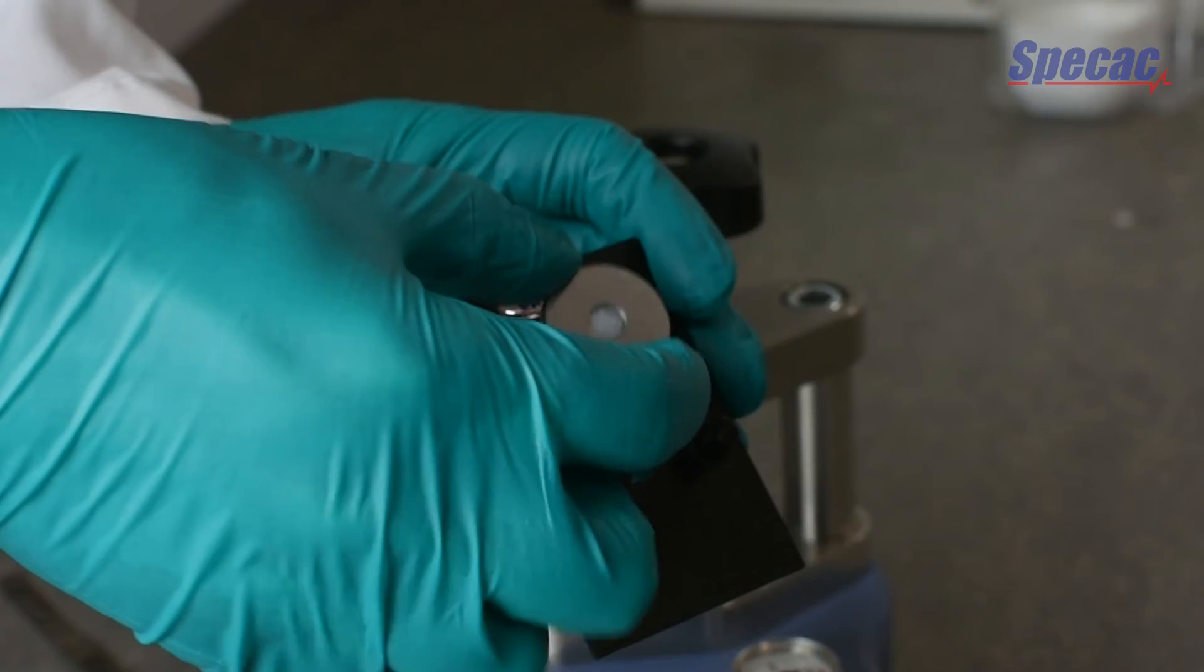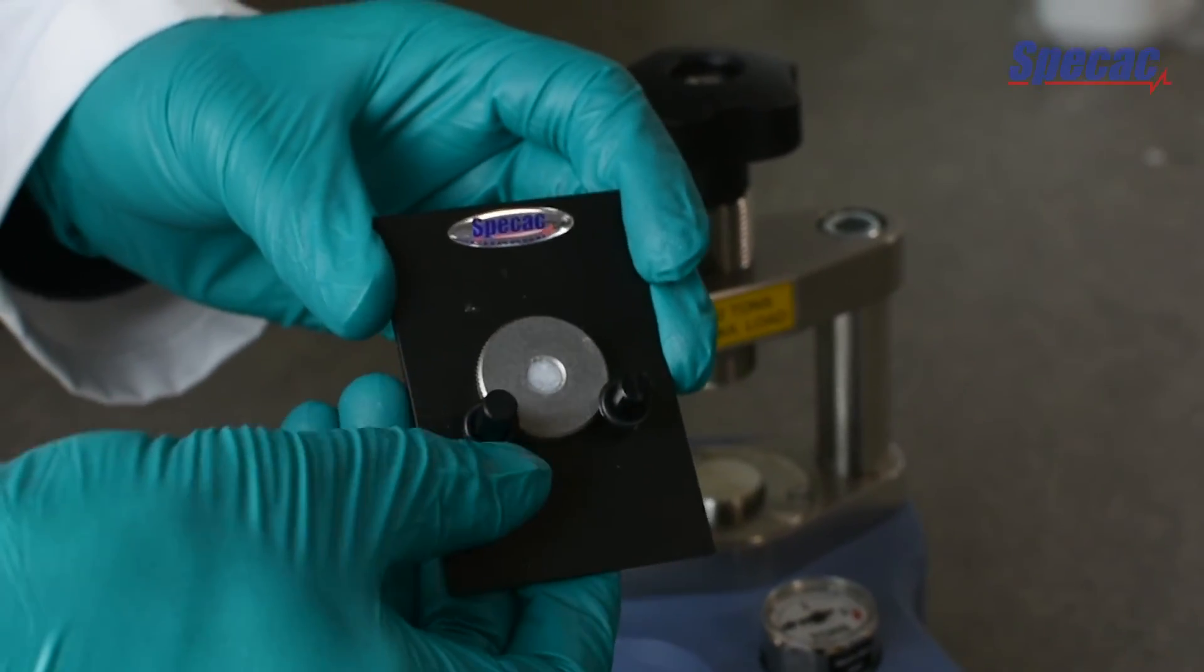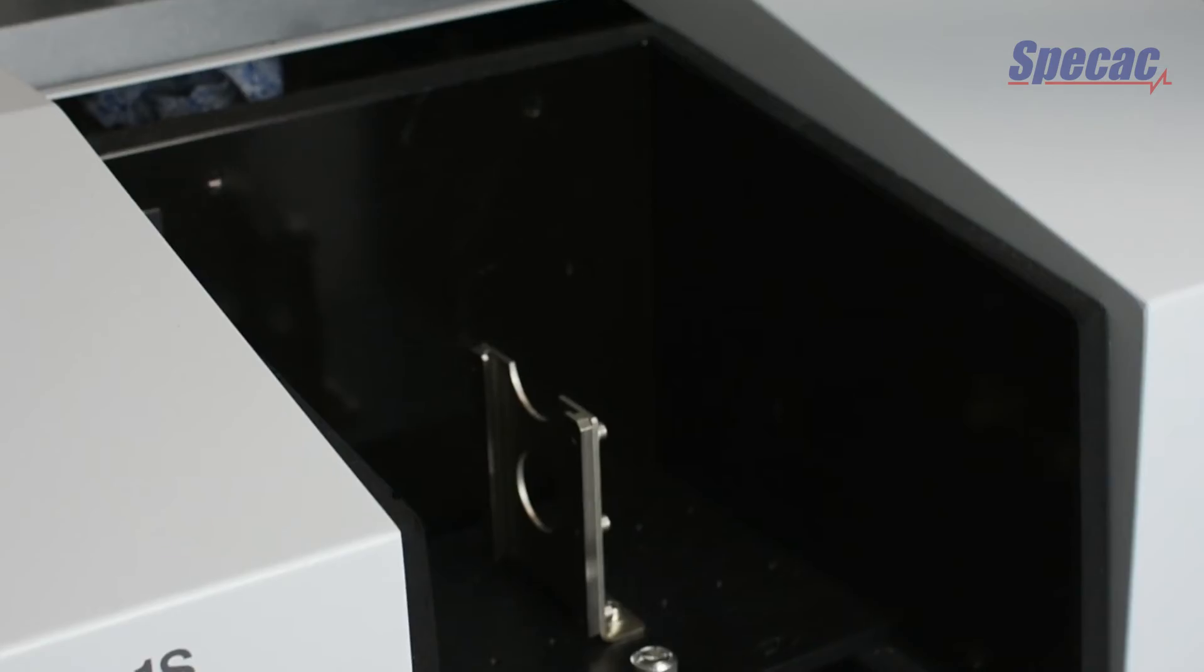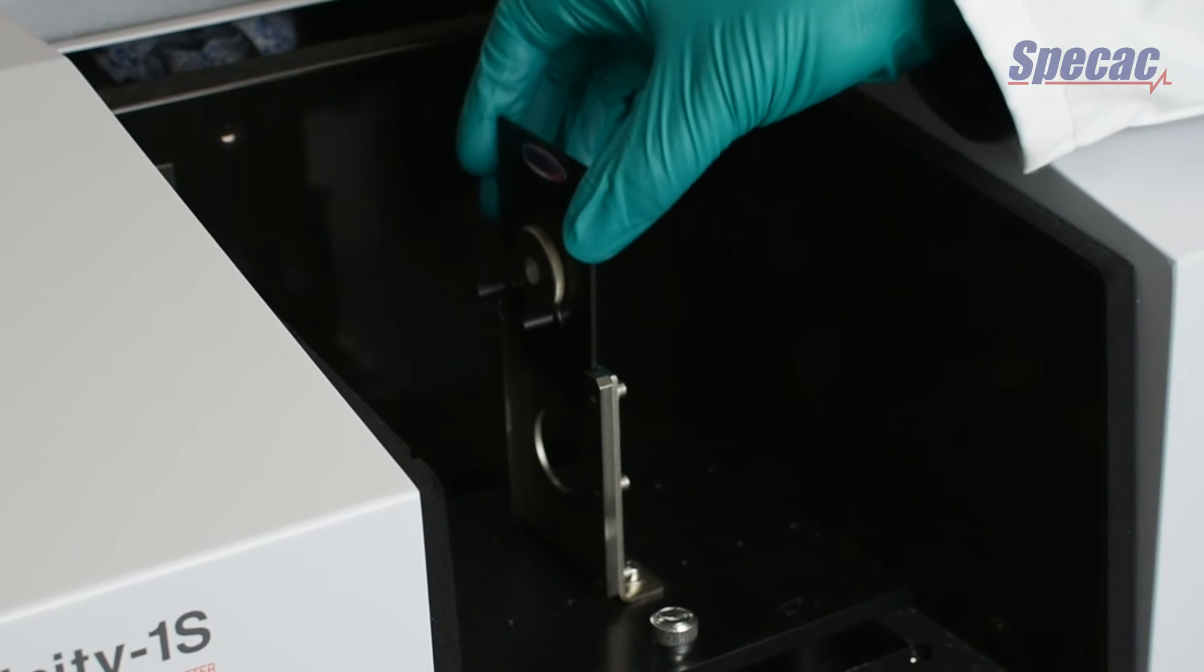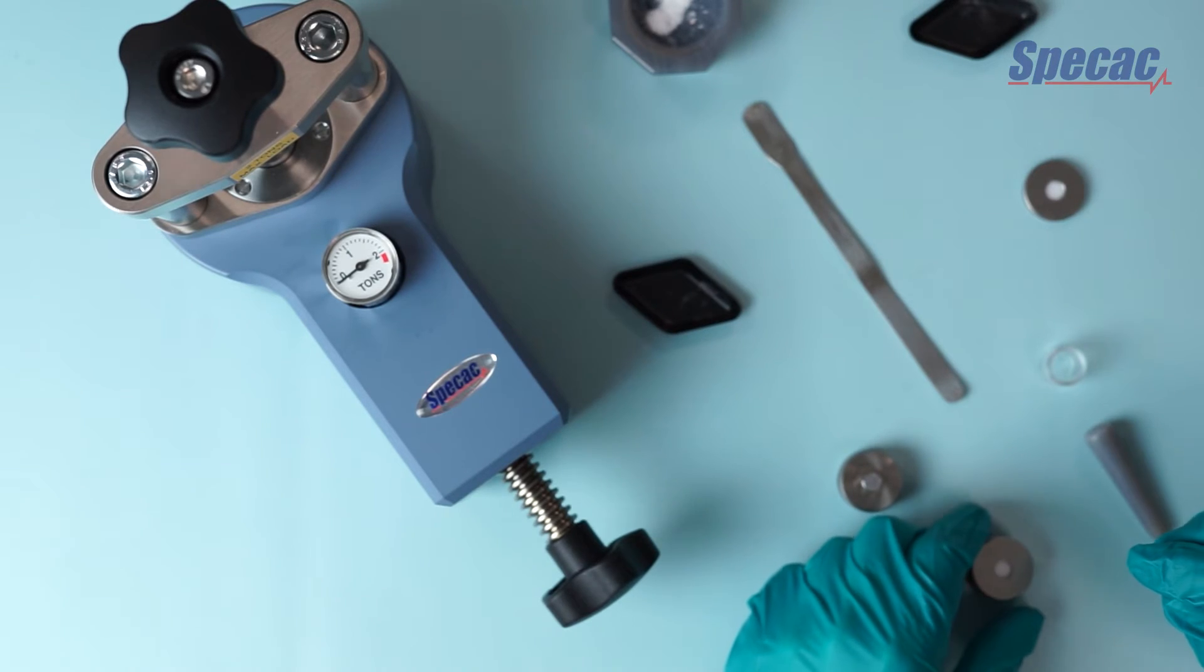We can then add this to the 3x2 slide mount provided with the kit, using these o-rings to just secure it in place. And then transfer it over to our spectrometer and fit it using the slide mount apparatus there.